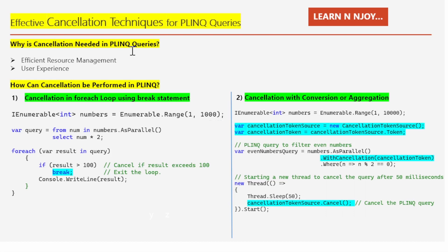Let's start by understanding why cancellation is needed in PLINQ queries. There are two main reasons: efficient resource management and user experience. PLINQ allows us to run queries in parallel using multiple threads to speed up our work. However, sometimes you might want to stop a query before it finishes, especially if it's taking too long or if we don't need all the results anymore. Cancellation also helps improve user experience by allowing us to interrupt long-running queries, preventing our application from becoming unresponsive.